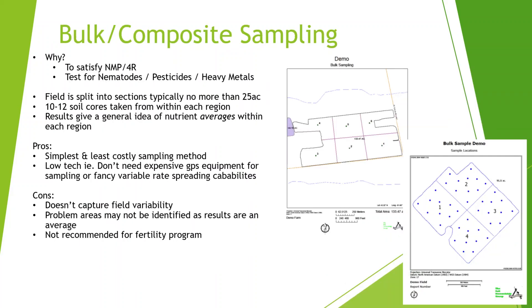Bulk composite sampling is a good way to satisfy a nutrient management plan or to get a very general idea of soil levels. It can be used for nematode type sampling, heavy metals, and pesticide residues, but it's not recommended for a fertility program. In bulk sampling, the field is split into sections typically no more than 25 acres, and 10 to 15 soil cores are taken within each region — results give averages within those regions. The pros are that it's the simplest and least costly sampling method and it's low-tech, so you don't need expensive GPS equipment. The cons are that it doesn't capture field variability, and thus problem areas may not be identified, which is why we do not recommend bulk sampling for a soil fertility program.